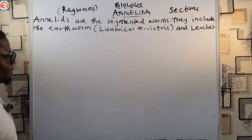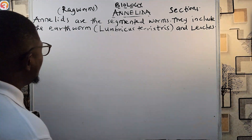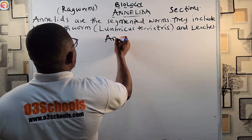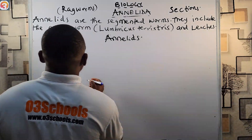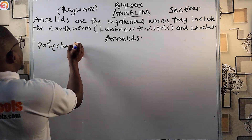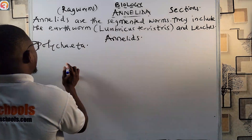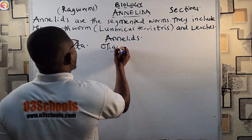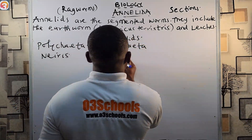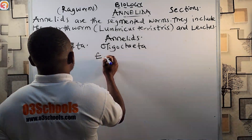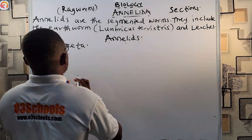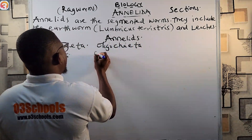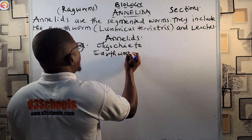The annelids can be classified into four groups. First, the Polychaeta — example is Nereis (the ragworm). Second, the Oligochaeta — example is the earthworm.